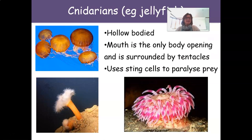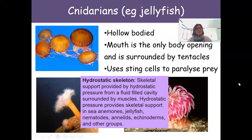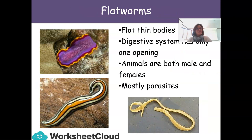Not all invertebrates have an exoskeleton. For example, the cnidarians — such as the jellyfish — are hollow-bodied. The mouth is the only body opening and is surrounded by tentacles; they use sting cells to paralyze their prey. They have a hydrostatic skeleton: skeletal support provided by hydrostatic pressure from a fluid-filled cavity surrounded by muscles. Hydrostatic pressure provides skeletal support in sea anemones, jellyfish, nematodes, annelids, and echinoderms.